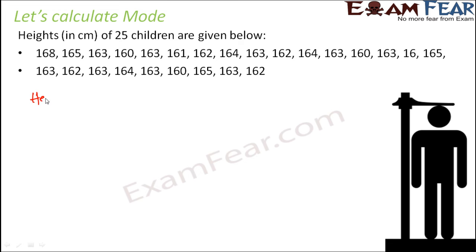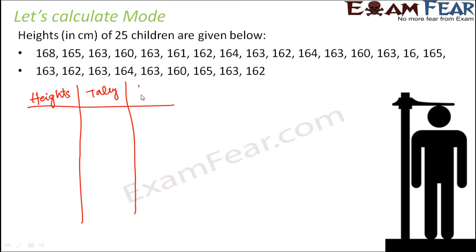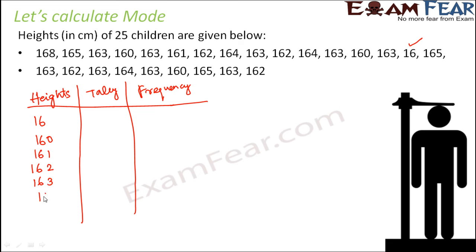We create three columns: the first column is for height, the second column is for the tally marks, and the third column is for frequency — to see how many times each data value gets repeated. The different heights present in the data are 16, 160, 161, 162, 163, 164, 165, and 168.